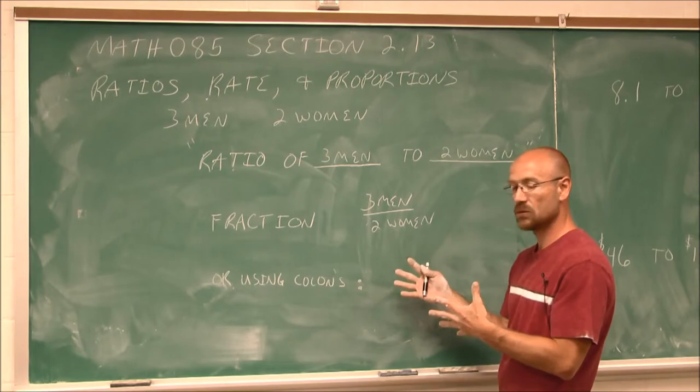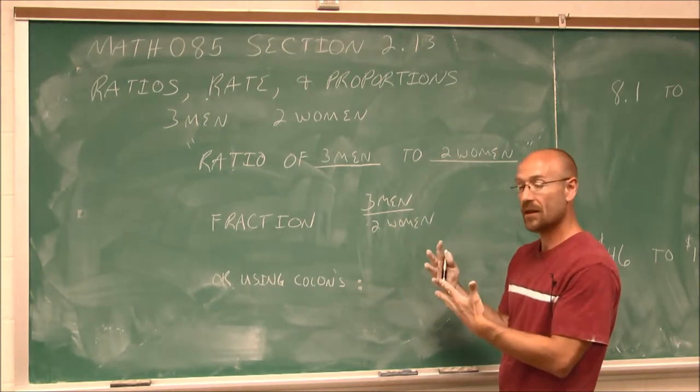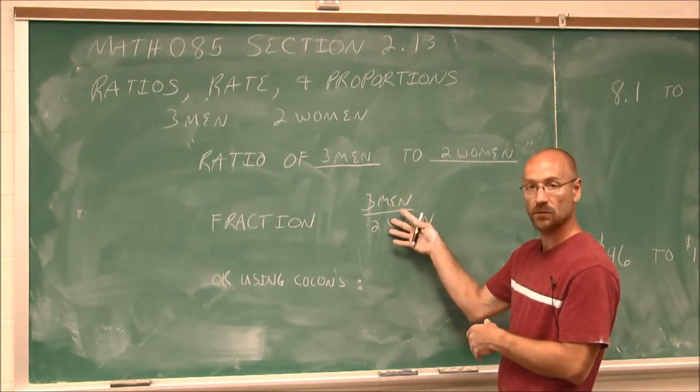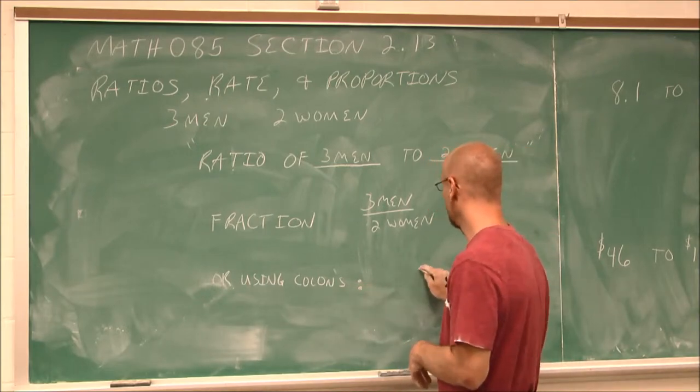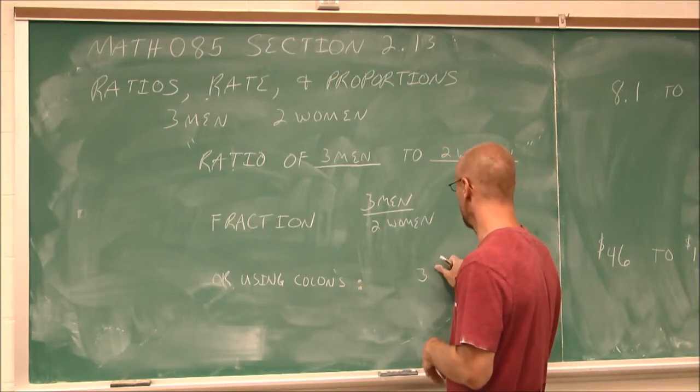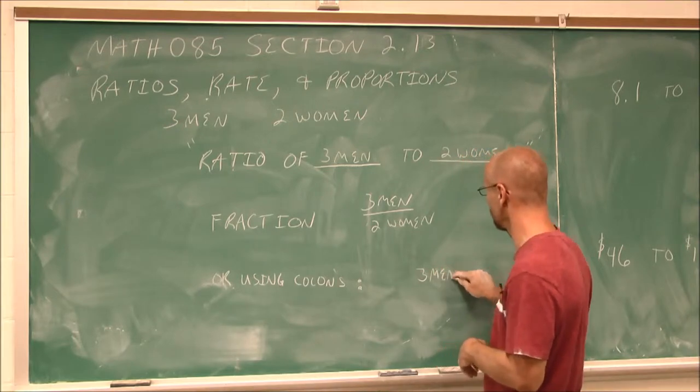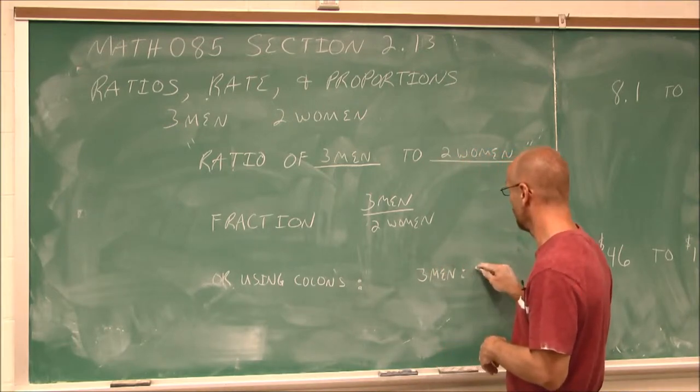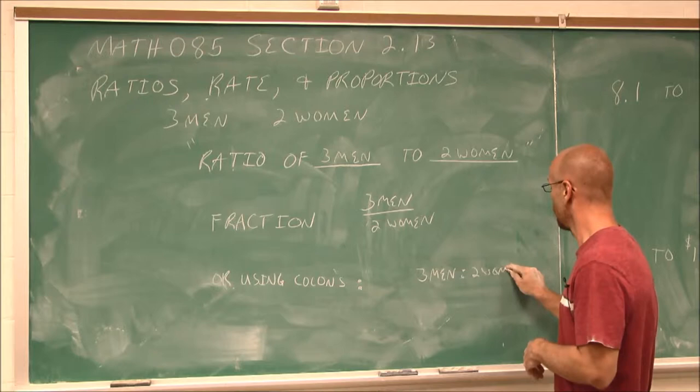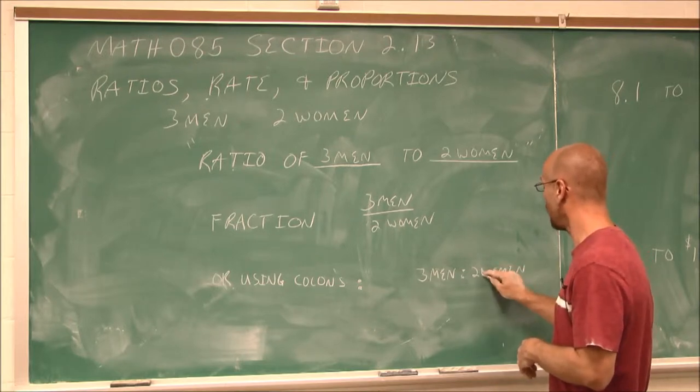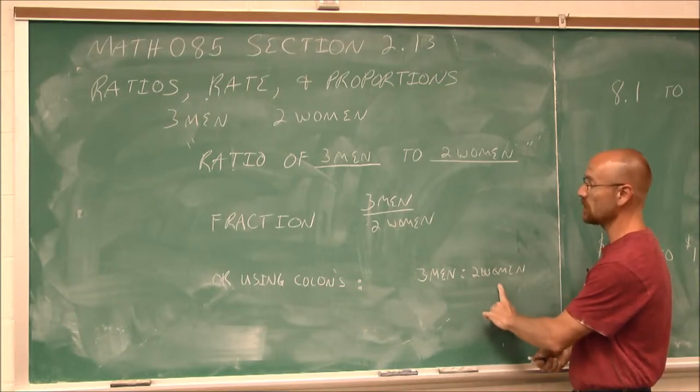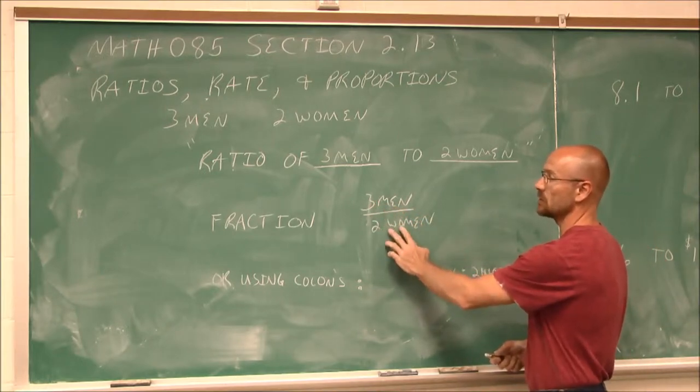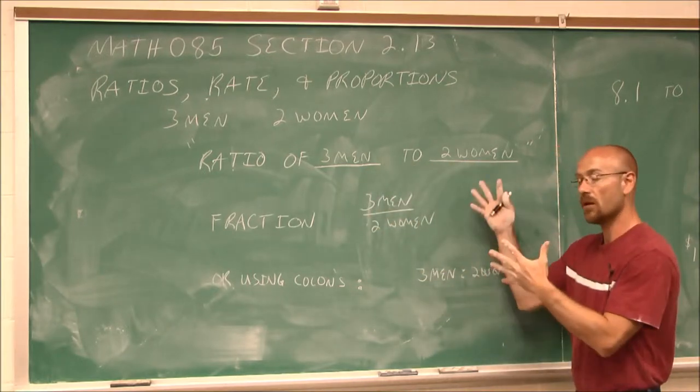We can also use colons, a third way to represent that. And this isn't used as often in math as maybe the fraction form, because we're familiar with fractions. But we might use the colon as three men to two women. But this is all essentially read the same. Three men to two women. So they all read the same.